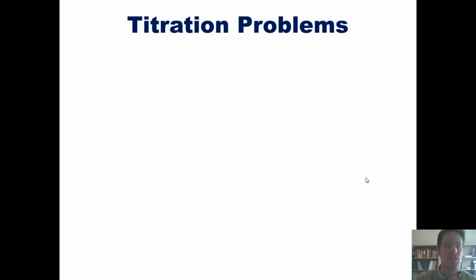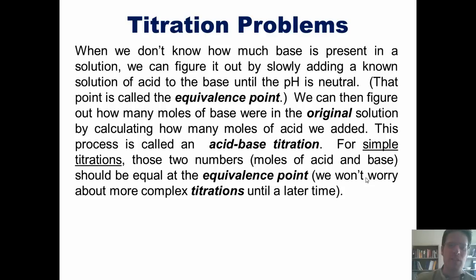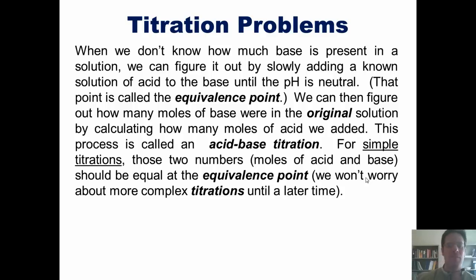We now turn to the subject of titration. Frequently we're in situations where I've got a solution that contains base, but I have no clue how much base is in it. When we don't know how much base is present, we can figure out how much there is by slowly adding a known solution of acid to the base until we reach neutral pH, which is pH 7.0. That pH level is called the equivalence point. At that point, we can figure out how many moles of base were in the original solution by calculating how many moles of acid we added. This process is called an acid-base titration.